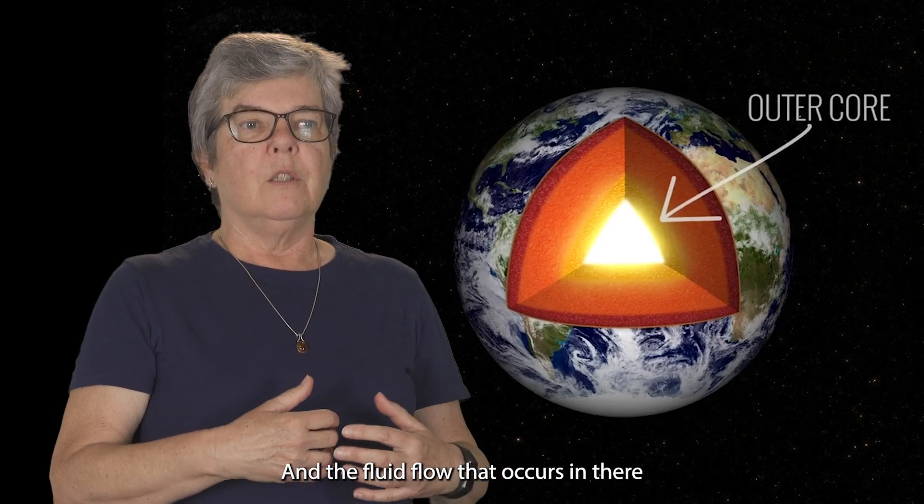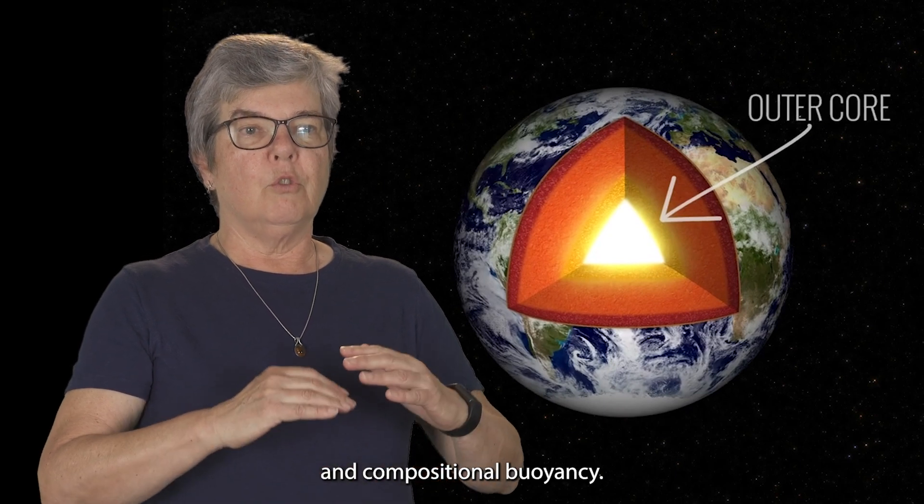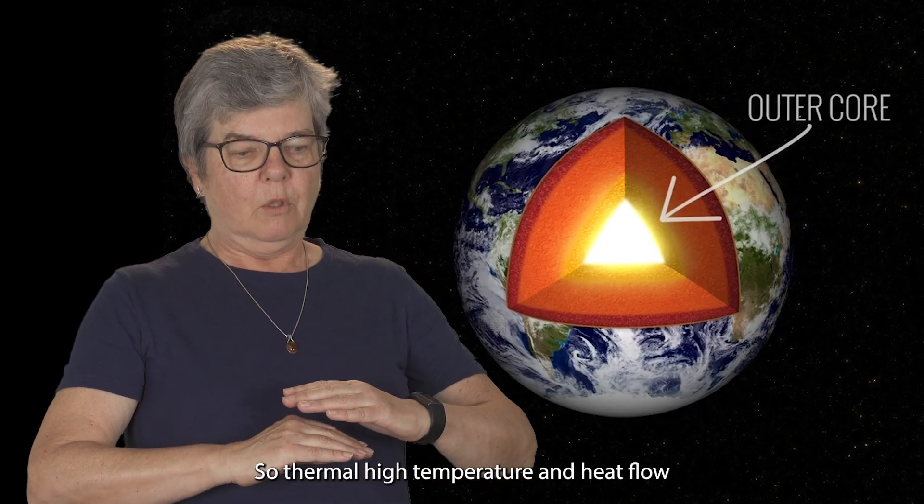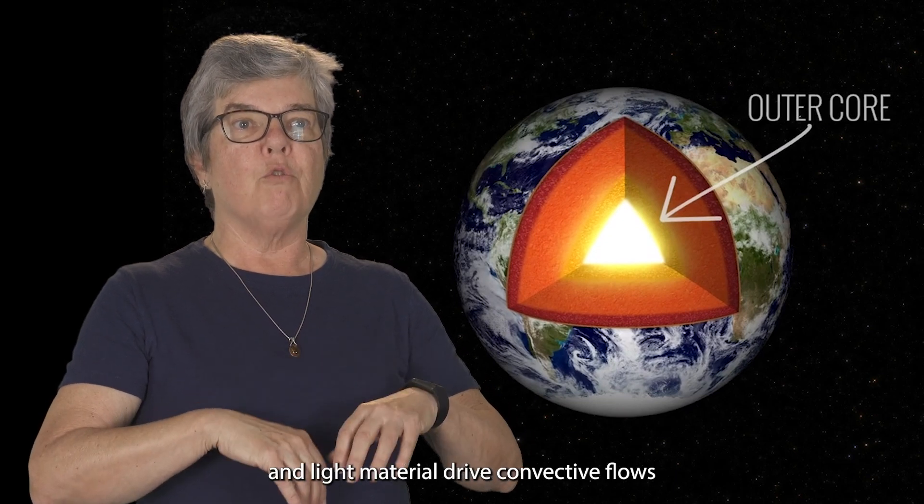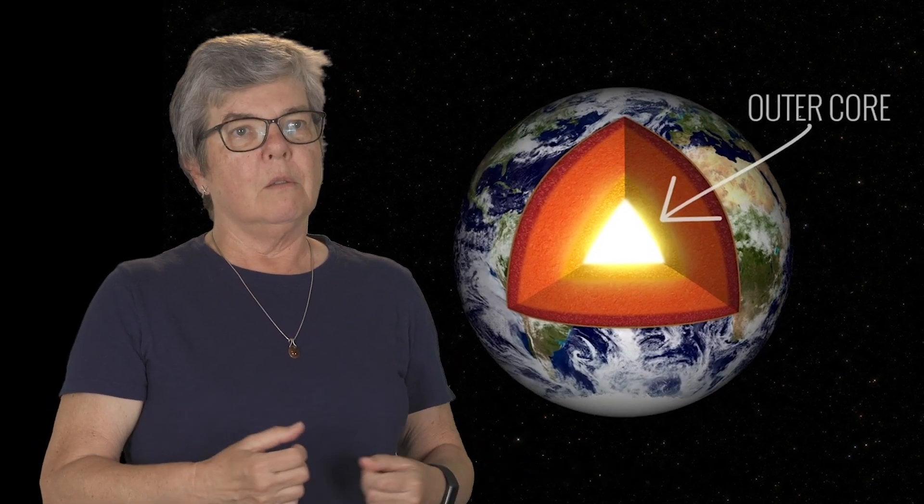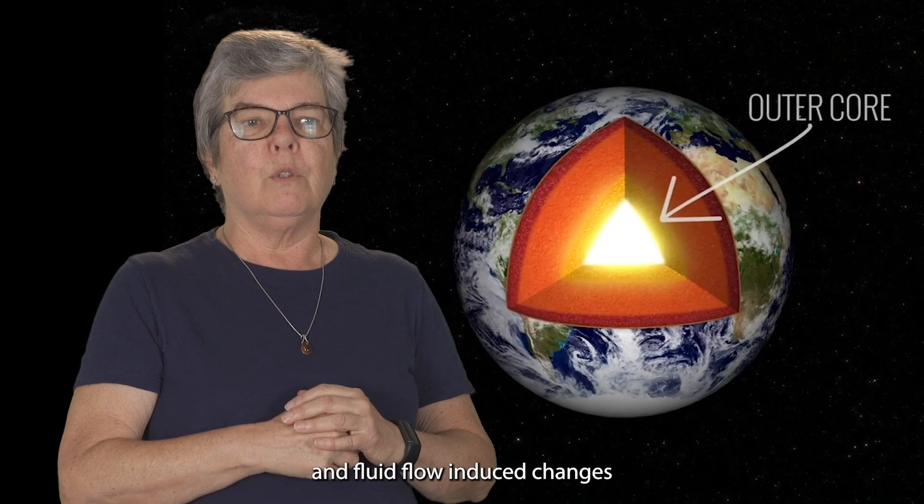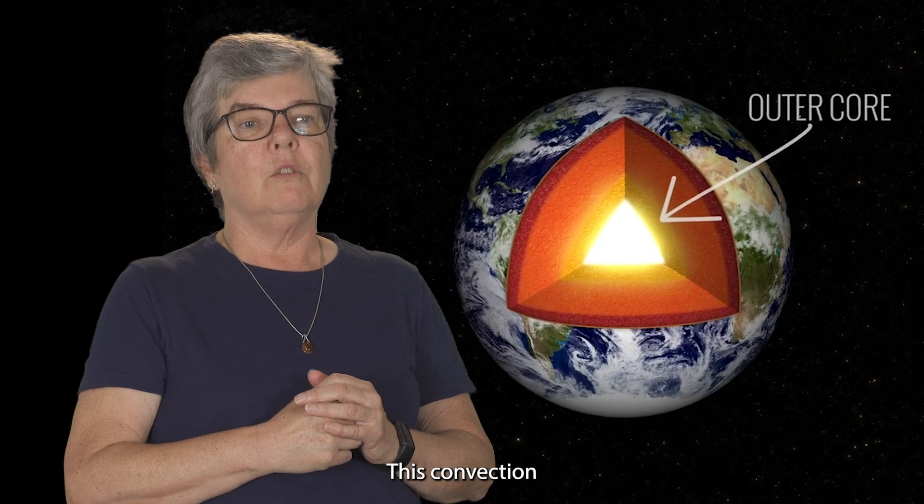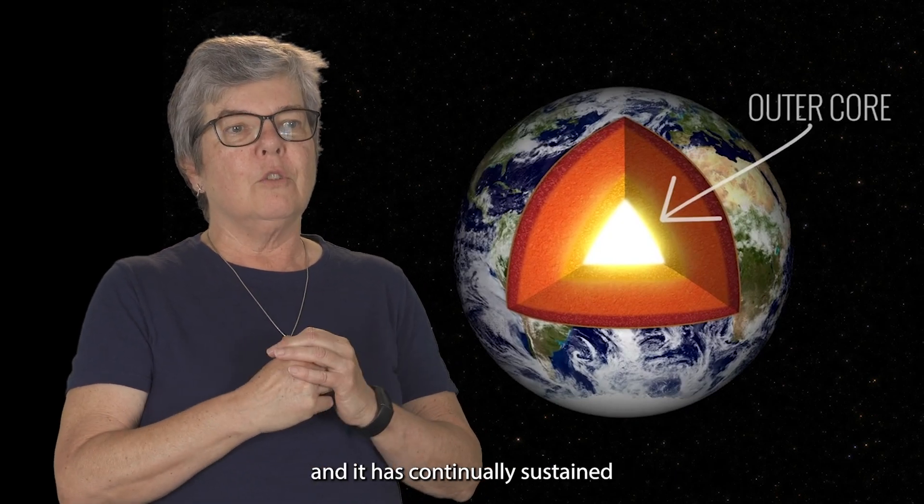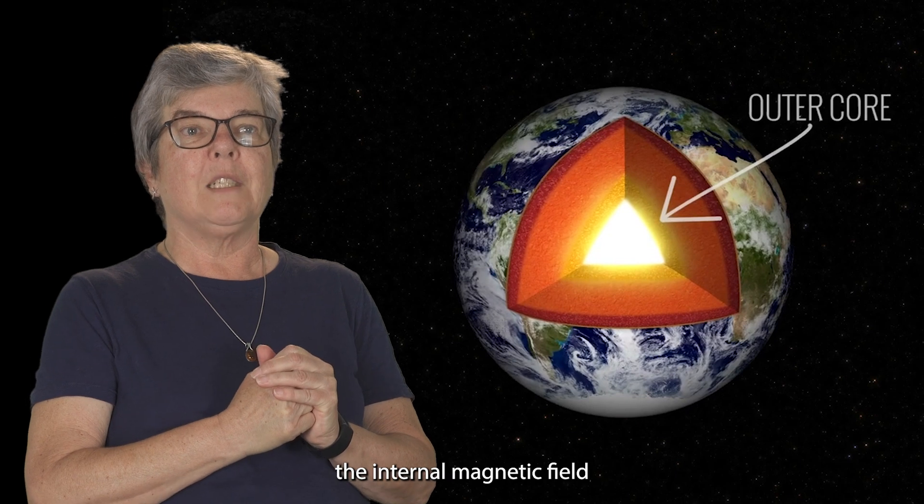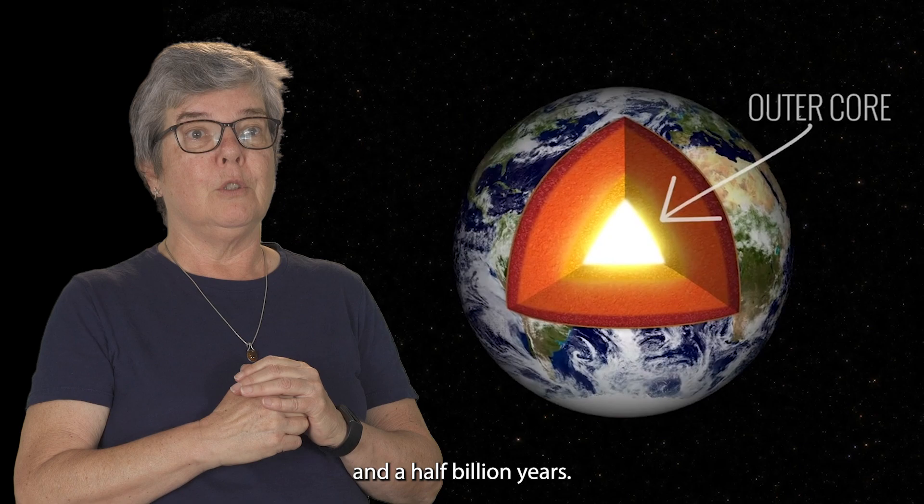And the fluid flow that occurs in there results from thermal and compositional buoyancy. So thermal high temperature and heat flow and light material drive convective flows, like boiling a kettle. And so the very high electrical conductivity and fluid flow induce changes in the magnetic field. This convection is also influenced by the Earth's rotation, and it has continually sustained the internal magnetic field throughout Earth's history. So that's for up to four and a half billion years.